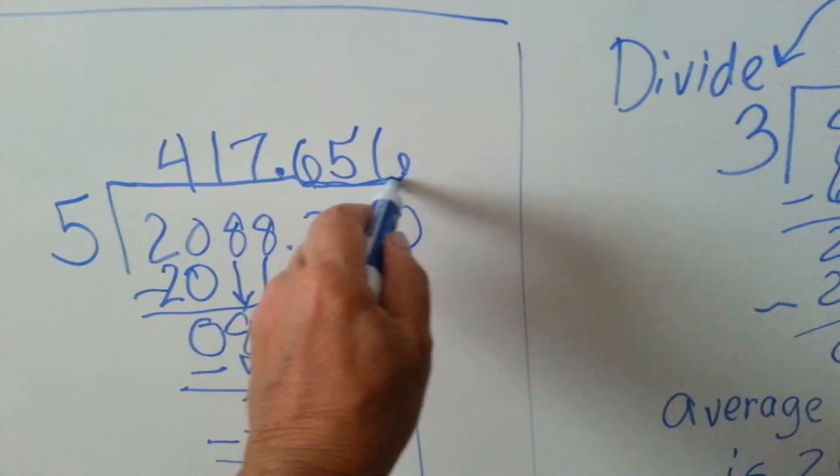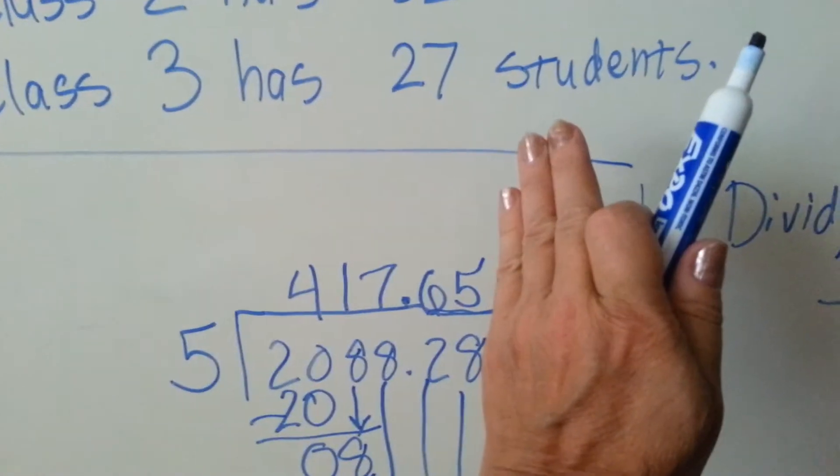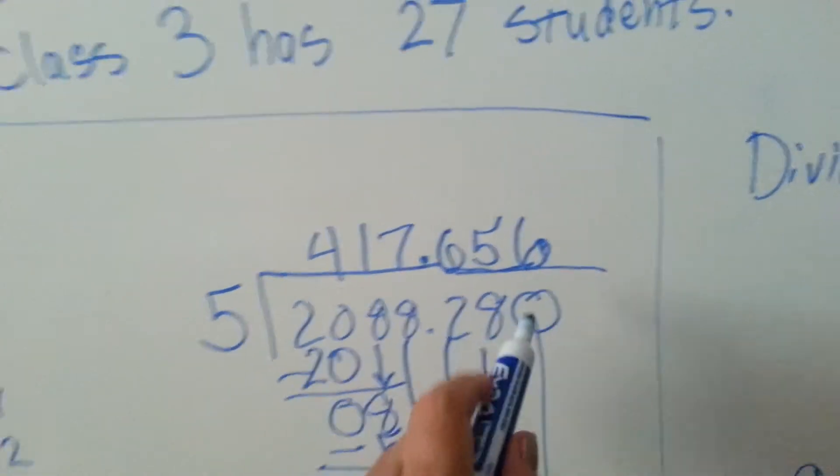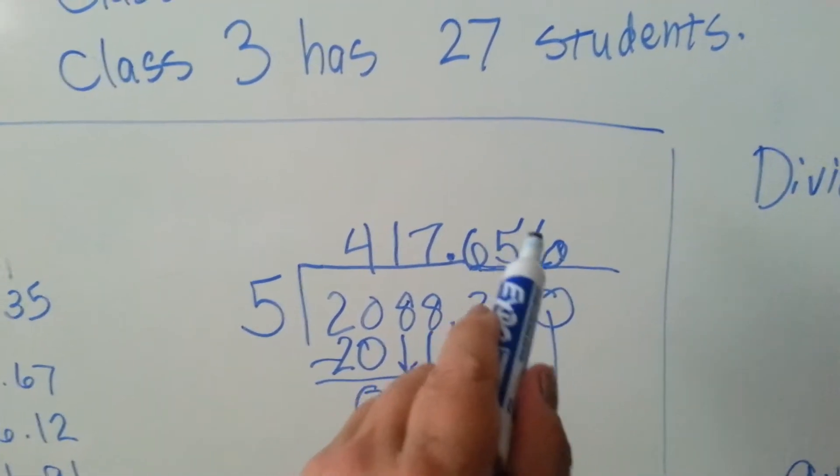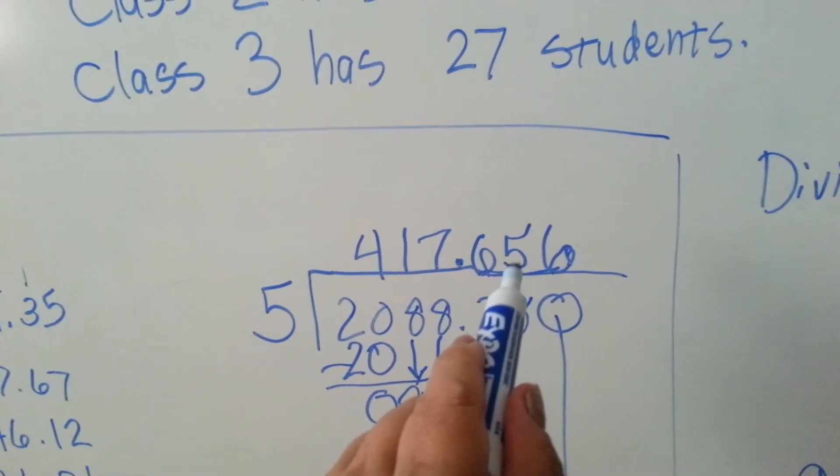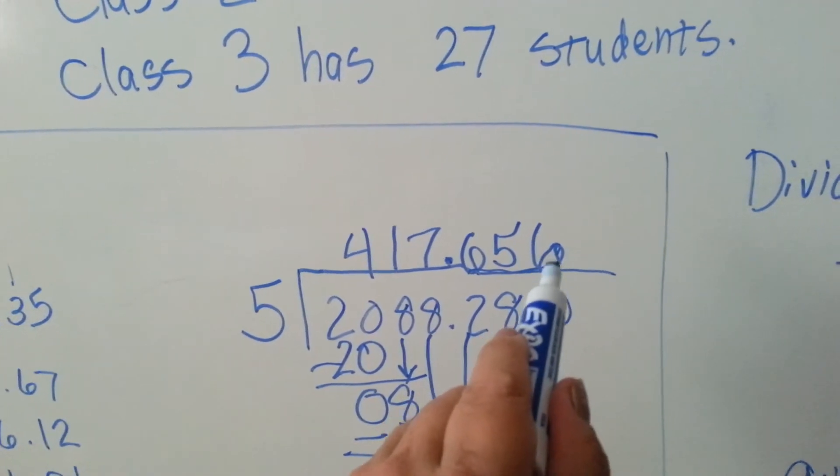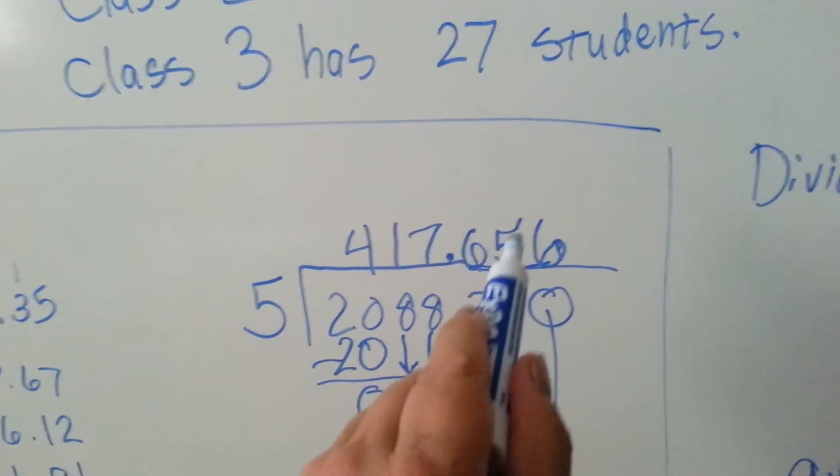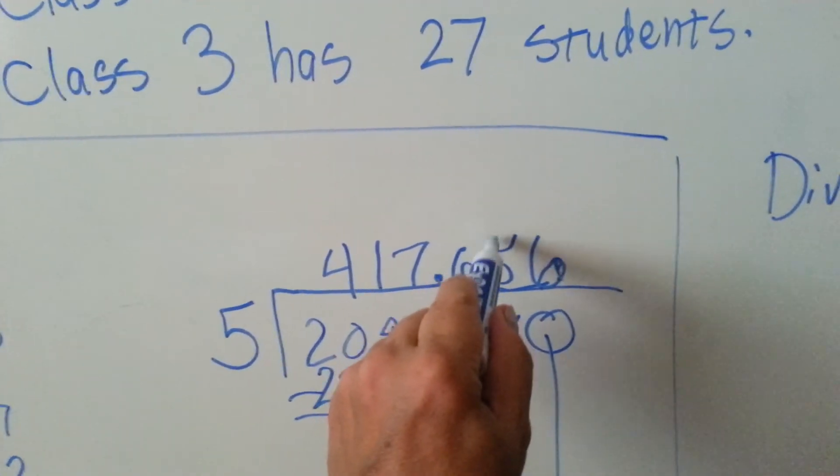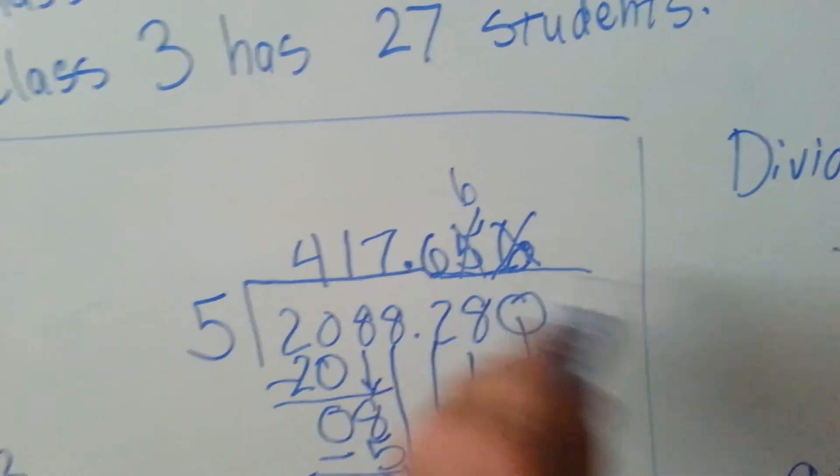Now, because we're dealing with money, we really only have two decimal places to work with. But, if you remember how to round off numbers, when the number to the right of it is a 1, 2, 3, or 4, it tells that number to stay the same. If the number to the right of it is a 5, 6, 7, 8, or 9, it tells this number to go up. So the 5 is going to become a 6. And then this one has done its turn, and it's gone.